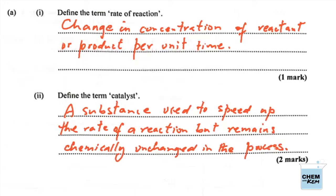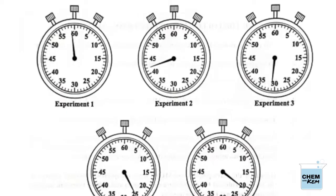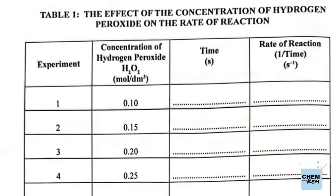Part (b): for each experiment shown on the stop clocks in Figure 1, record in Table 1 the time taken for the hydrogen peroxide to decompose. First, we always look at the scale on the instrument — each stroke represents one second. Experiment 1: 59 seconds. Experiment 2: 42 seconds. Experiment 3: 31 seconds. Experiment 4: 25 seconds. Experiment 5: 21 seconds.